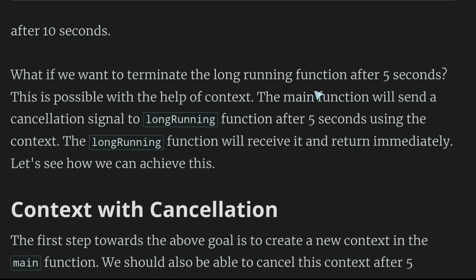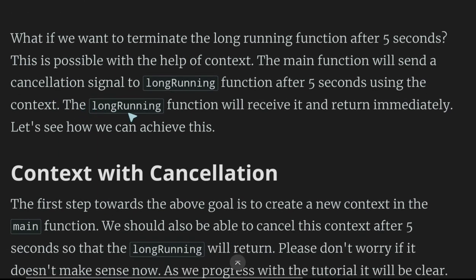In Java, the usual way to do this is to start a new thread and then interrupt it. But here we're saying it's possible with the help of context in Go, which is built into the language. The main function will send a cancellation signal to the long-running function after five seconds. This raises the question: are we going to see code that checks for the context in each iteration, or will it be something more automatic?